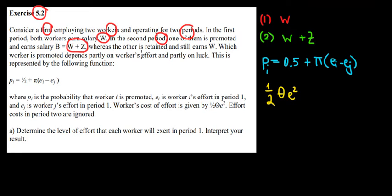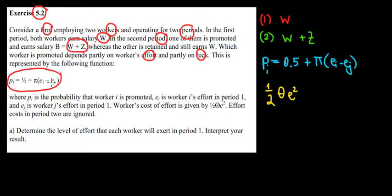There is a probability of getting that promotion, and it depends on effort and luck. The 1/2 represents the 50-50 probability based on pure luck. Pi shows the dependence on effort — specifically, by how much the effort of the first worker exceeds that of the second. So both luck and effort matter.